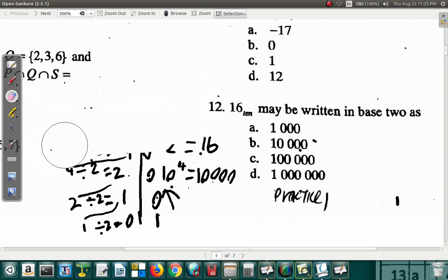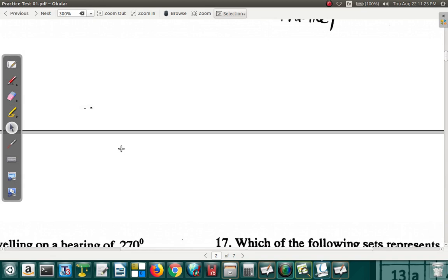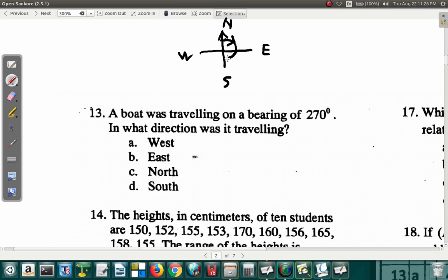Let's continue. A boat was traveling on a bearing of 270 degrees. In what direction was it traveling? You have north, south, east, west. The bearing is 270 degrees. Bearings are measured from north in a clockwise direction. You go 270. This is 90, 180, 270. So the boat would have been going west.